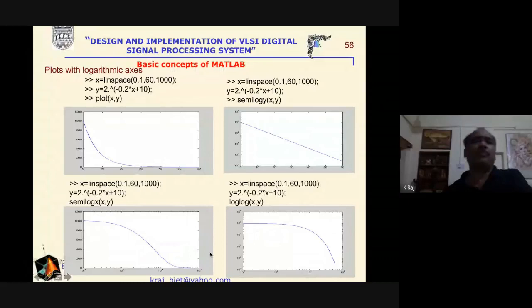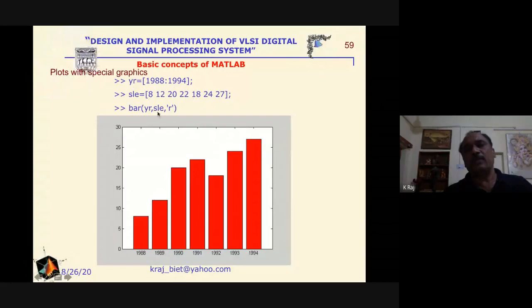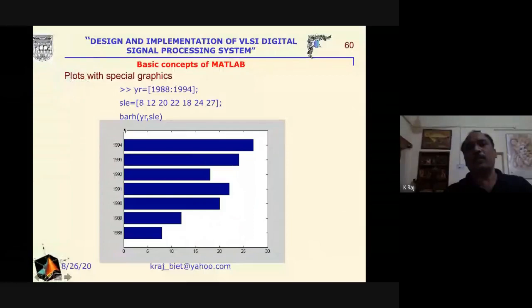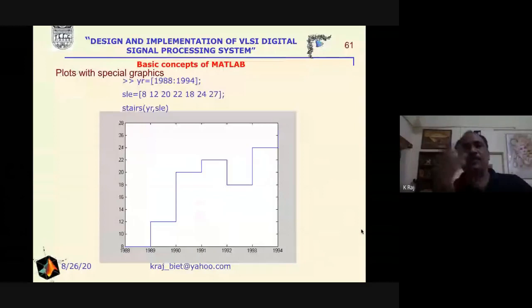For a vertical bar graph, define x (year) and y (sales) and write bar(x, y). For a horizontal bar graph, write barh(x, y). By default without a line specifier, the bar will be blue in color. For a stair plot, define x and y and write stairs(x, y), which will also be blue by default.